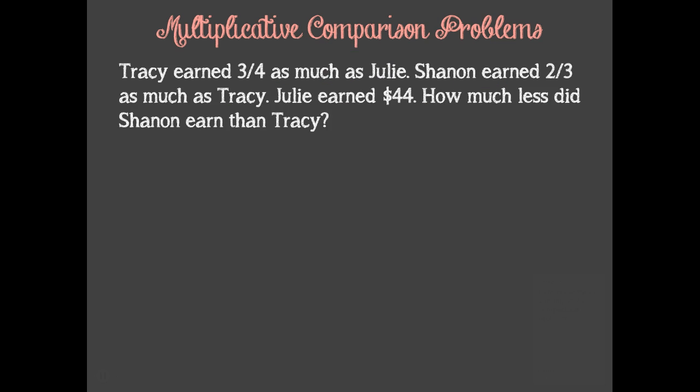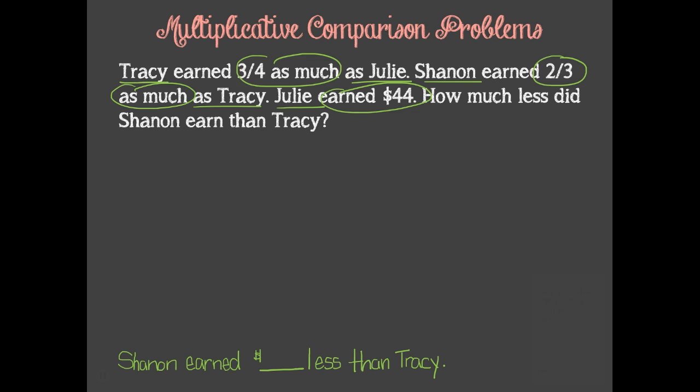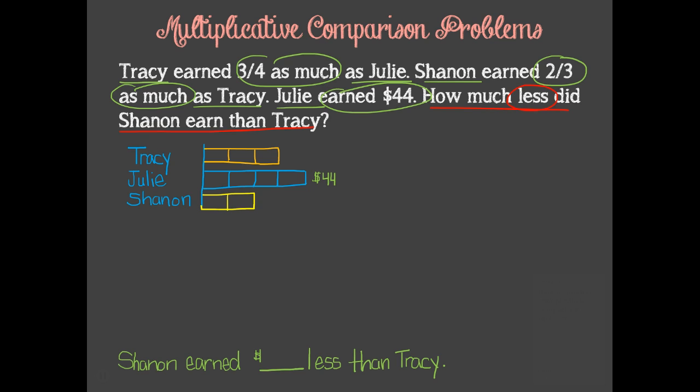Here's another multiplicative comparison problem. I'd like you to try this one on your own. Pause the video while you solve it. When you're ready to check your answer, start the video again. Did you remember to rewrite the question in sentence form? Did you identify the important information? Did you give Julie 4 units since the problem states that Tracy earned 3 fourths as much as Julie? Did you give Tracy 3 equal size units to represent her having 3 fourths as much as Julie? Did you give Shannon 2 equal size units to show that she earned 2 thirds as much as Tracy? Did you place $44 at the end of Julie's unit bar? Did you recognize that the problem asks how much less Shannon earned than Tracy?